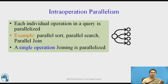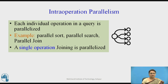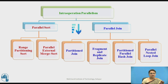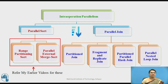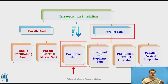Inter-operation parallelism: in parallel databases, every individual operation in a query is parallelized. The operations may be sorting, searching, or join — a single operation is taken for parallelism and parallelized. So for operations like parallel sorting and parallel join techniques, we have already covered parallel sort in previous videos. Today we will be studying this partition join operation, which is one of the parallel join techniques.